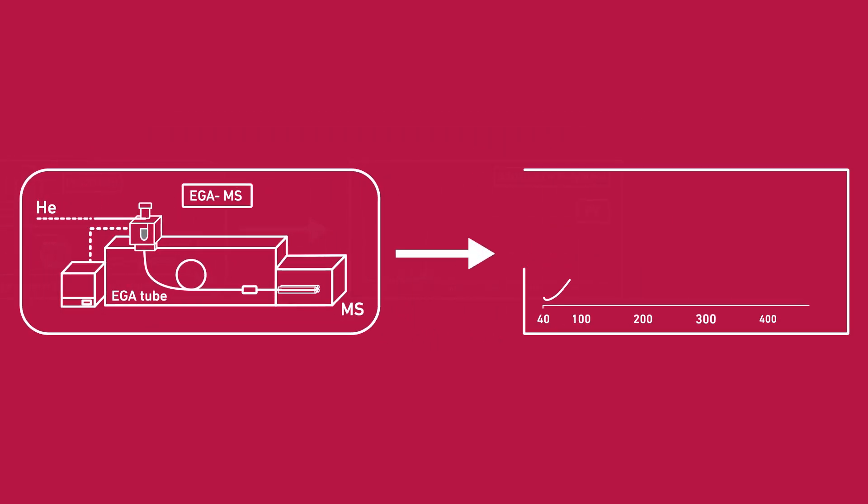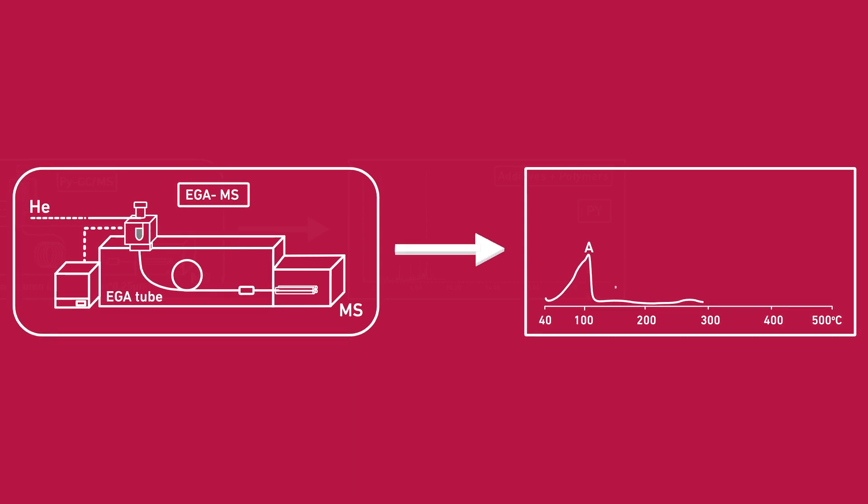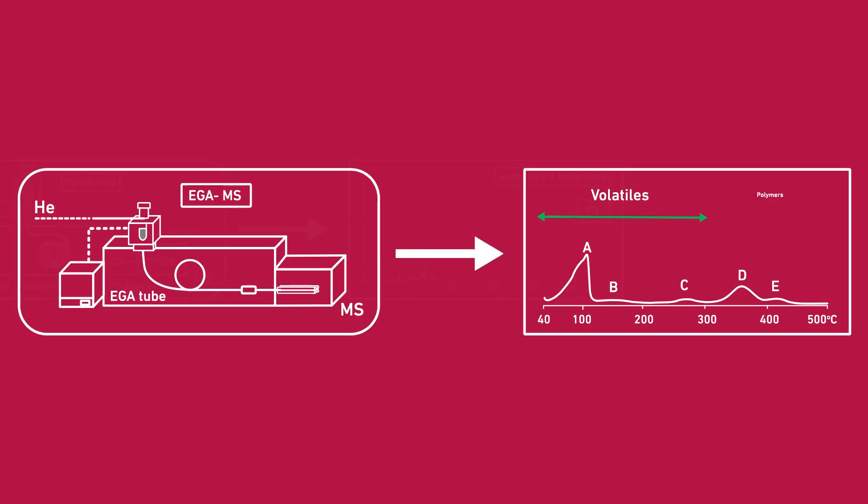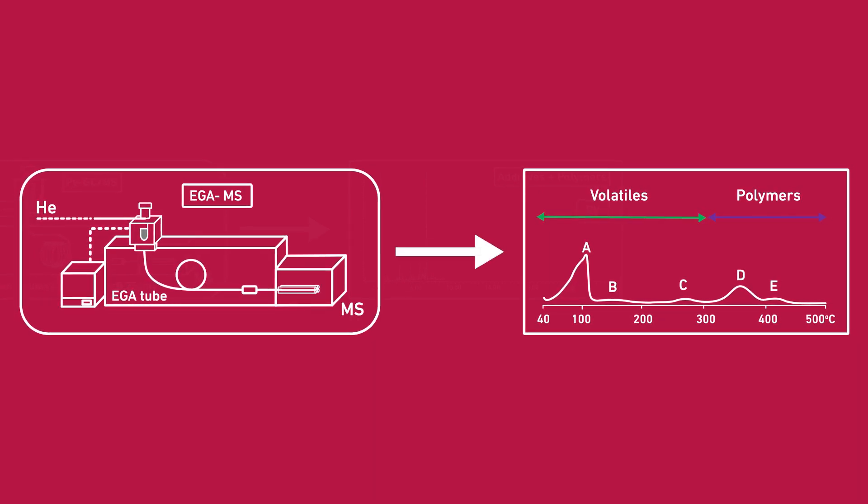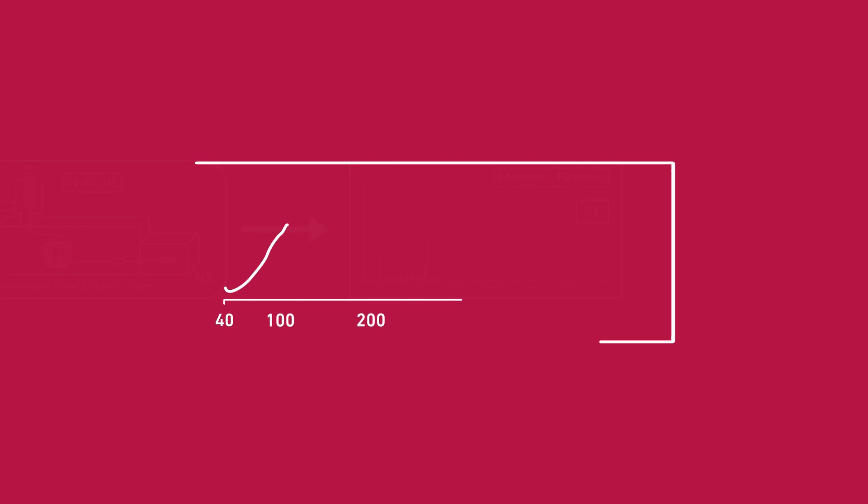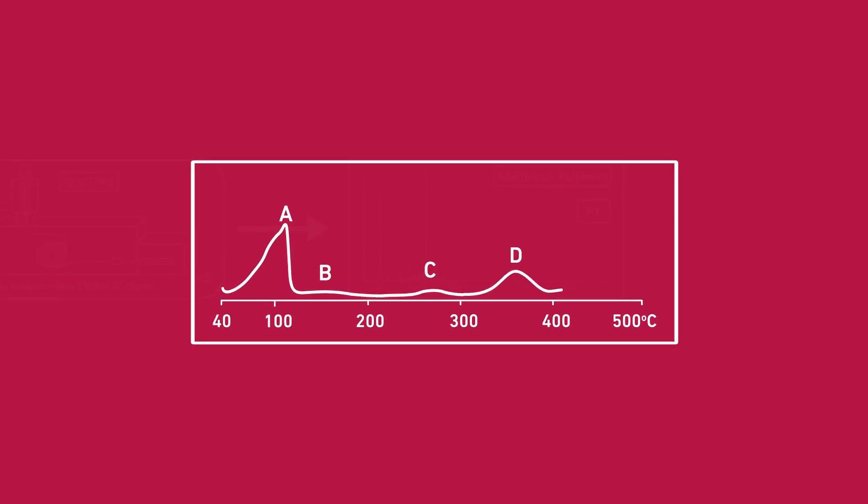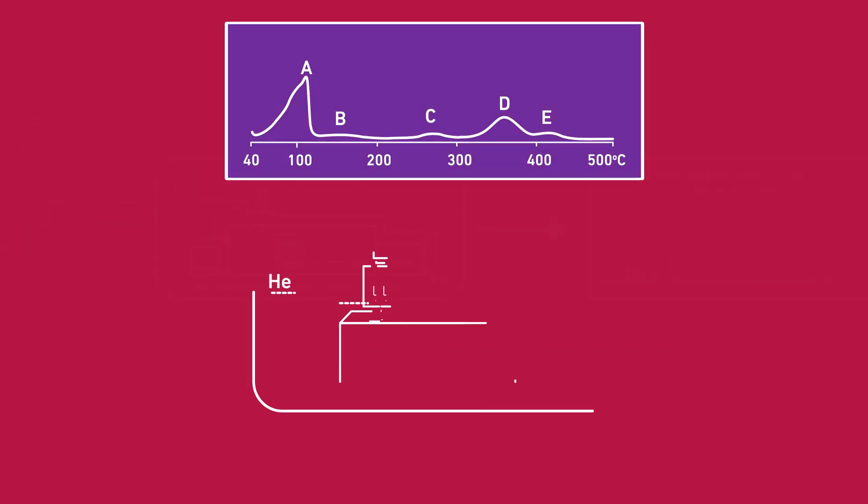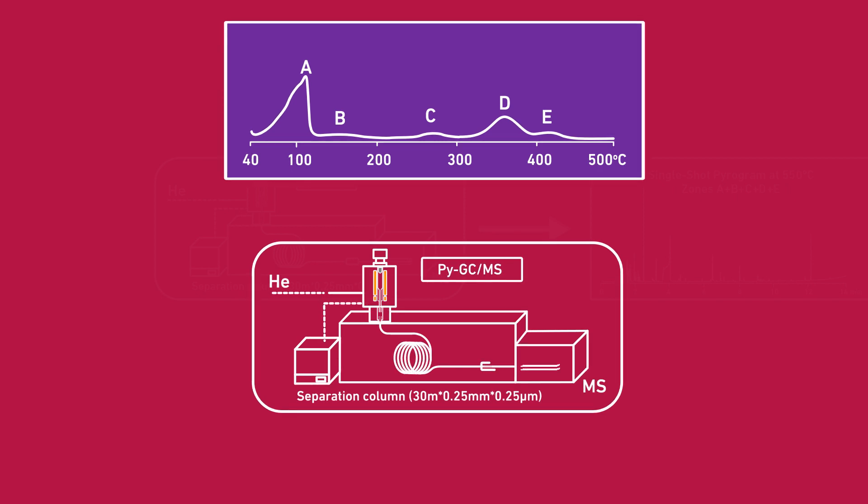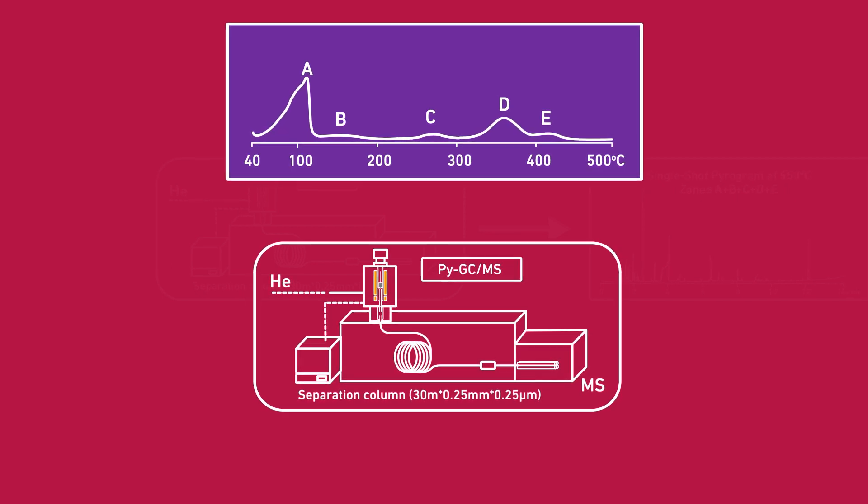A total of five peaks are observed. Three peaks, A, B, and C, are the volatiles in the sample. And two peaks, D and E, originate from the polymeric materials in the sample. If you perform flash pyrolysis, also known as single-shot, the obtained pyrogram contains all of the organics in the sample from zones A to E.